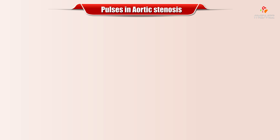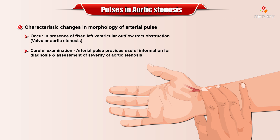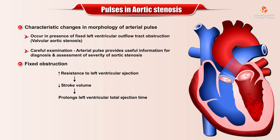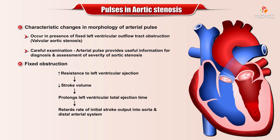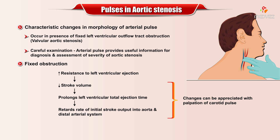Pulses in Aortic Stenosis. Characteristic changes in the morphology of the arterial pulse may occur in the presence of fixed left ventricular outflow tract obstruction, particularly valvular aortic stenosis. Careful examination of the arterial pulse provides useful information for the diagnosis and assessment of the severity of aortic stenosis. Increased resistance to left ventricular ejection due to fixed obstruction reduces the stroke volume, prolongs left ventricular total ejection time, and retards the rate of initial stroke output into the aorta and the distal arterial system. This results in a number of changes that can be appreciated with palpation of the carotid pulse.